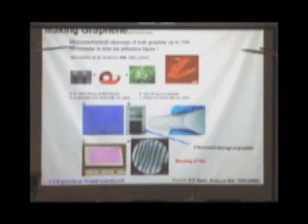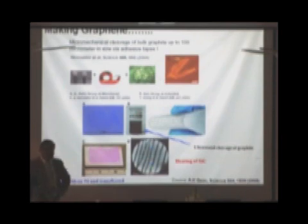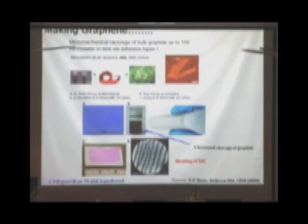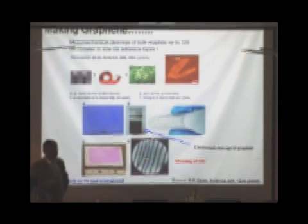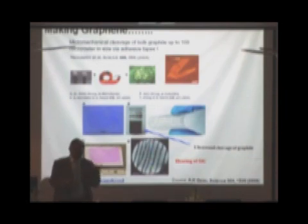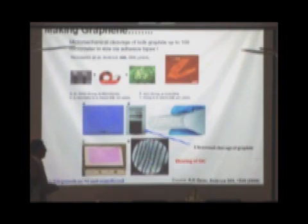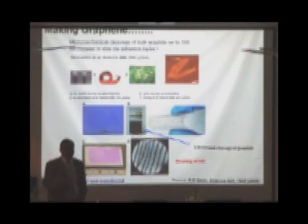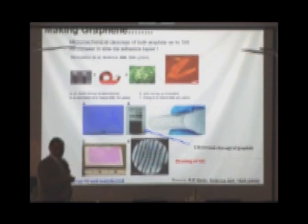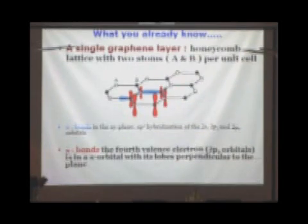There are many other methods beyond the scotch tape approach. You can produce graphene by chemical vapor deposition of methane on copper or nickel. You can use silicon carbide. There are lots of methods now where you can grow graphene on a large scale, not only the mechanical exfoliation which was demonstrated in 2004.